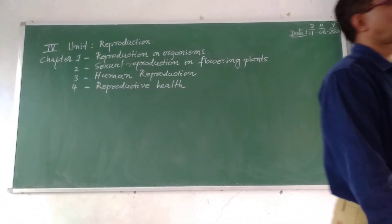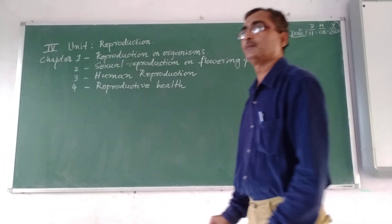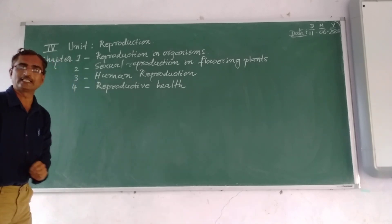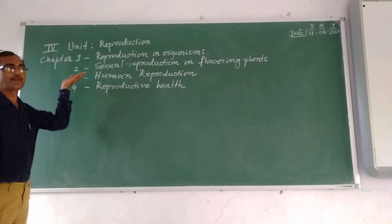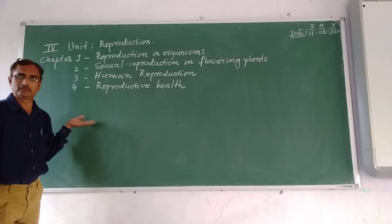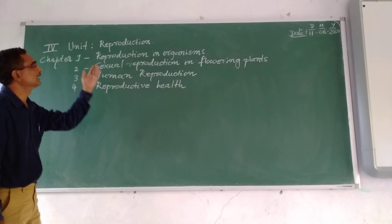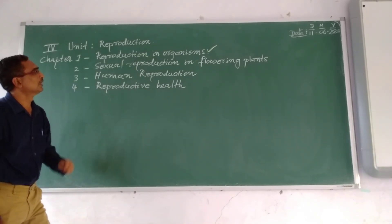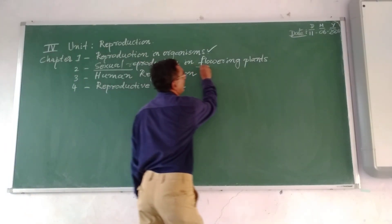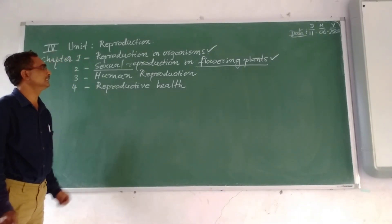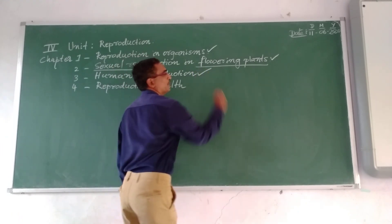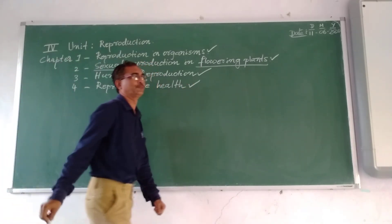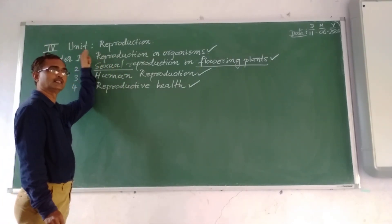And the fourth chapter is regarding reproductive health. So in the second year we are having five units. The first unit for the second year is the sixth unit, that is reproduction, and in it we are supposed to discuss four chapters. This is about the sixth unit that is reproduction.